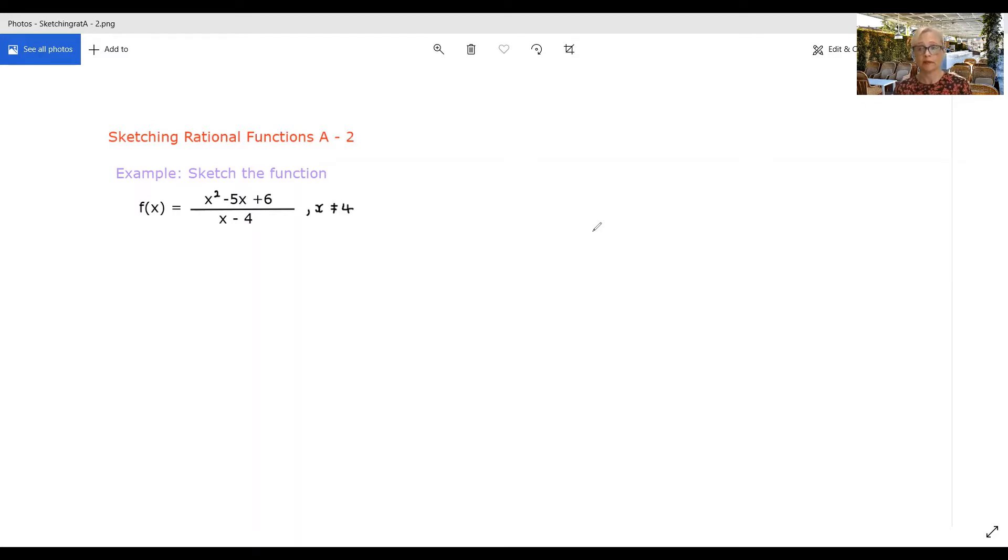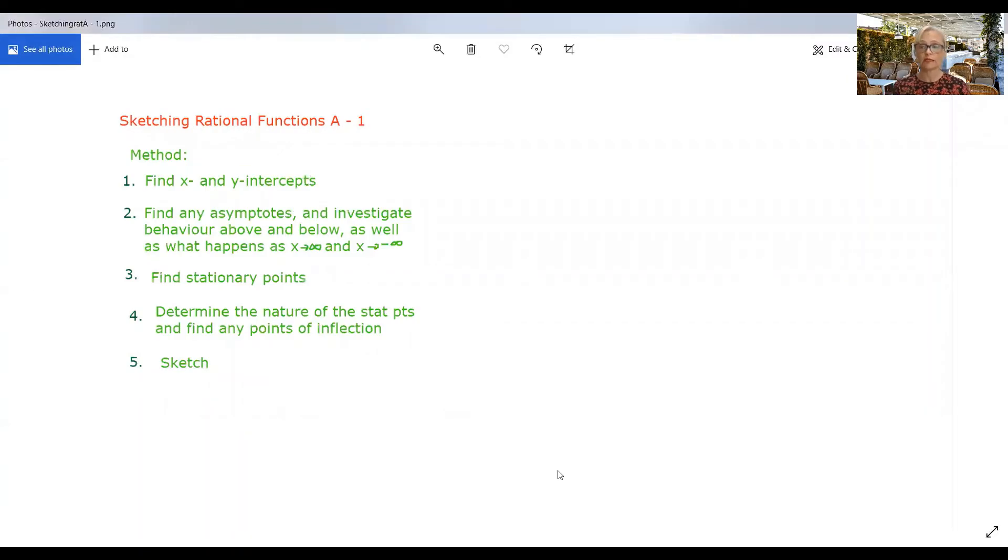Now I've got an example here that I'm going to go through with you in detail. Before I actually go through that I want to show you the process that you go through. It's very similar to sketching any sort of graph where you're finding stationary points, x and y intercepts etc. However in the case of a rational function you quite likely will have some asymptotes to deal with.